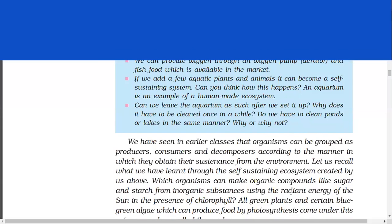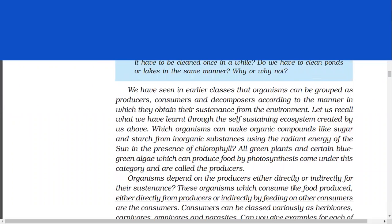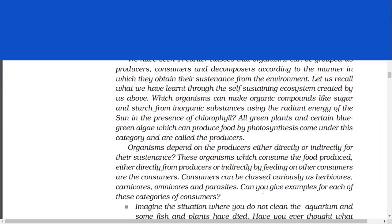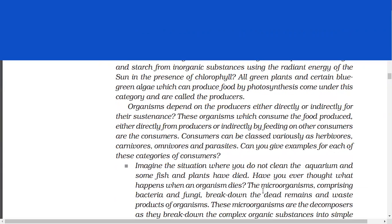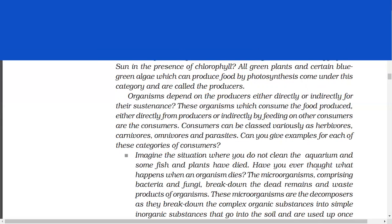We have seen in earlier classes that organisms can be grouped as producers, consumers and decomposers according to the manner in which they obtain their sustenance from the environment. Let us recall what we have learnt through the self-sustaining ecosystem created by us above. Which organisms can make organic compounds like sugar and starch from inorganic substances using the radiant energy of the sun in the presence of chlorophyll? All green plants and certain blue-green algae which can produce food by photosynthesis come under this category and are called the producers. Organisms depend on the producers either directly or indirectly for their sustenance. These organisms which consume the food produced either directly from producers or indirectly by feeding on other consumers are the consumers. Consumers can be classed variously as herbivores, carnivores, omnivores and parasites. Can you give examples for each of these categories of consumers?